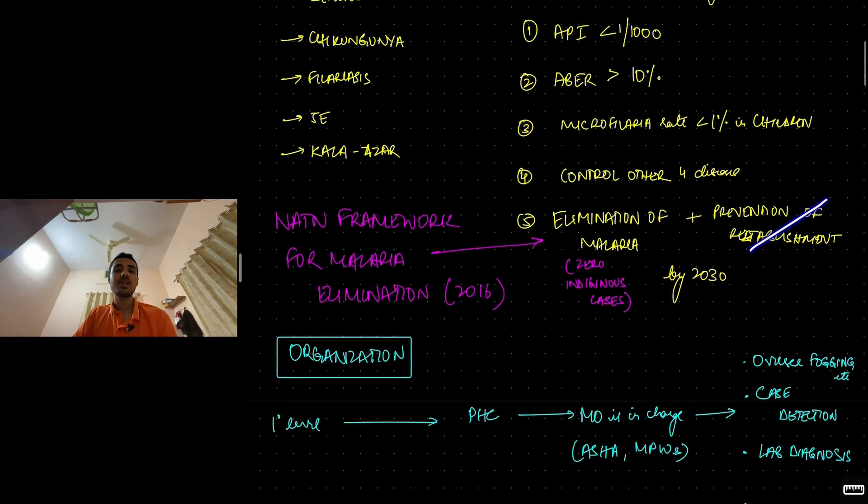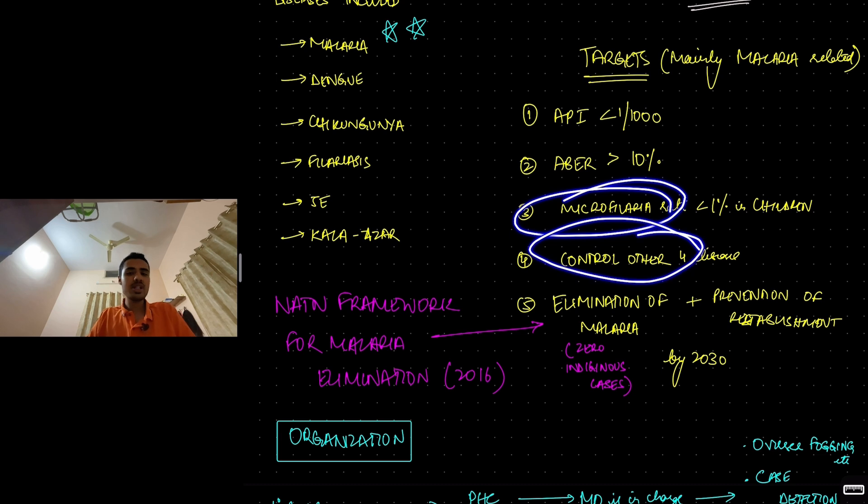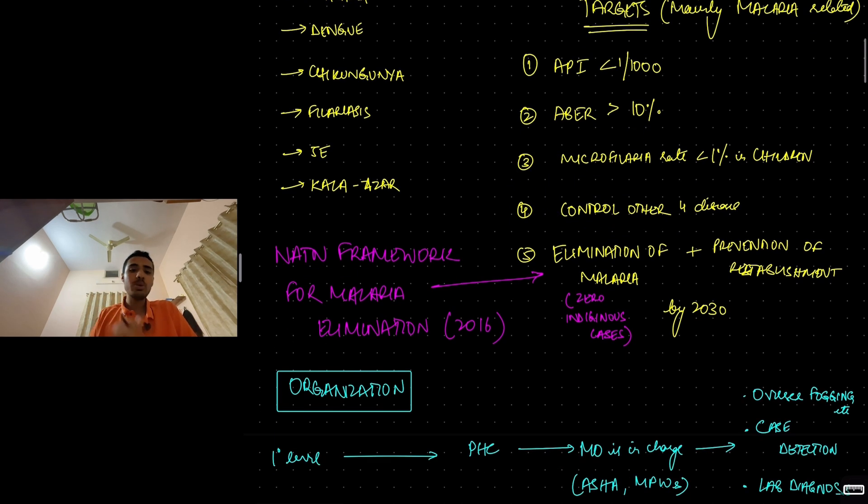By 2030, the goal is to have malaria eliminated. That is, zero indigenous cases and also to prevent the re-establishment. Once you eliminate it, we don't want the disease to come back. So we want to prevent the re-establishment. Remember annual parasite incidence and annual blood examination rate.